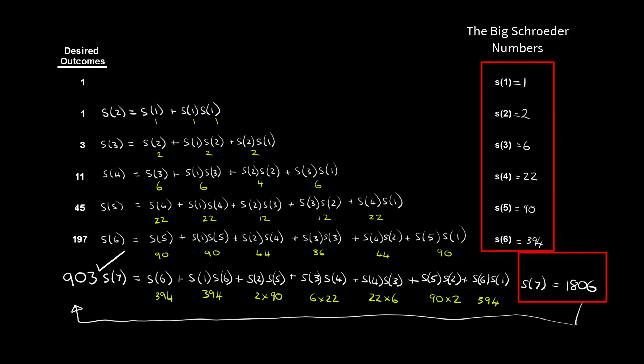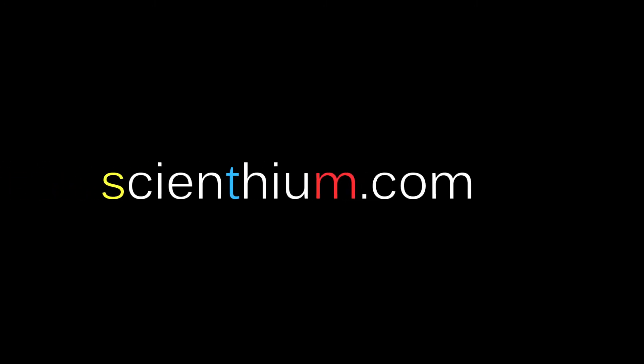The numbers on the right are known as the big Schroeder numbers. They can be used to count the number of paths through a lattice. Clearly there are patterns in the summation for each term of the Schroeder Hipparchus sequence that I have not mentioned but I will leave these for you to explore.